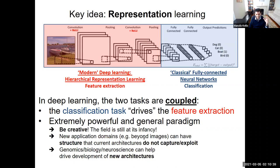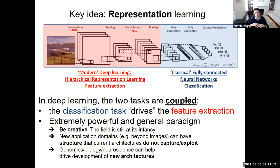The field is still at its infancy. There are many application domains beyond images that have structure current architectures do not yet capture and exploit. As you start thinking about representation learning, this is the place to be very innovative about your own architectures — in genomics, biology, and neuroscience, you can use the application domain to develop potentially new architectures.